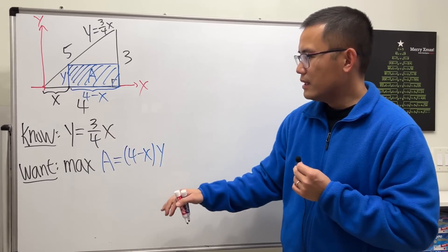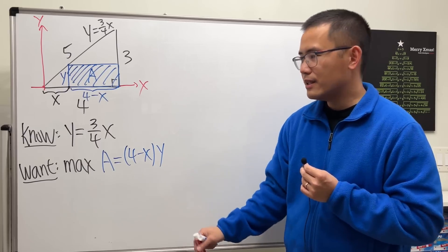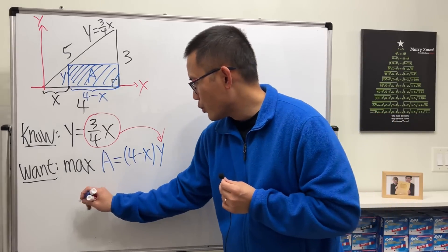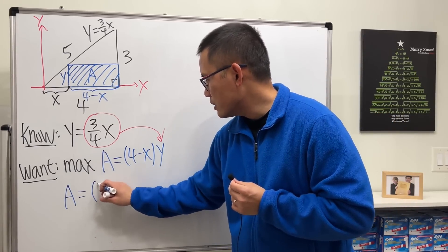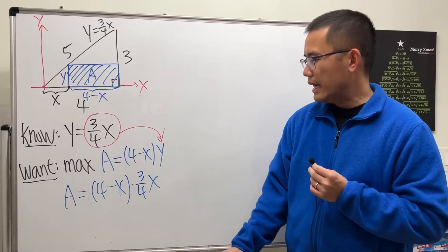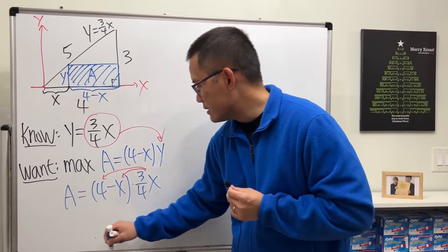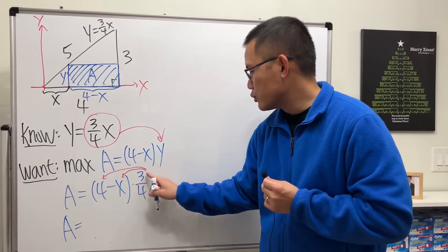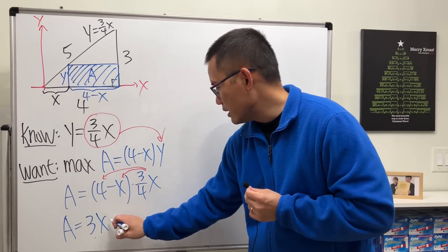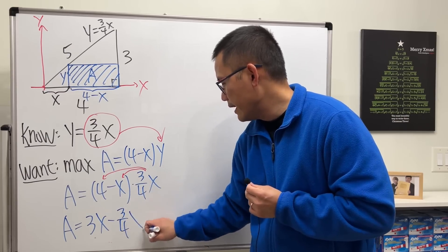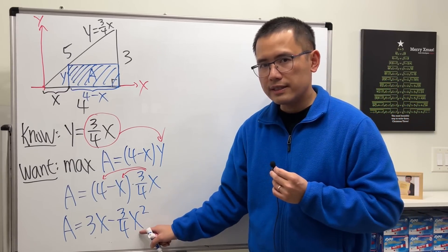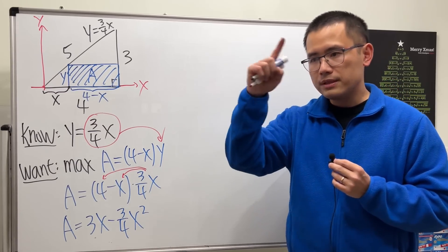We know y = (3/4)x, so let's substitute that in to get area as a function of x. Distributing, 4 times (3/4) gives 3x — the 4's cancel — and negative x times (3/4)x gives negative (3/4)x squared. So we have A(x) = 3x minus (3/4)x squared, which is a quadratic.